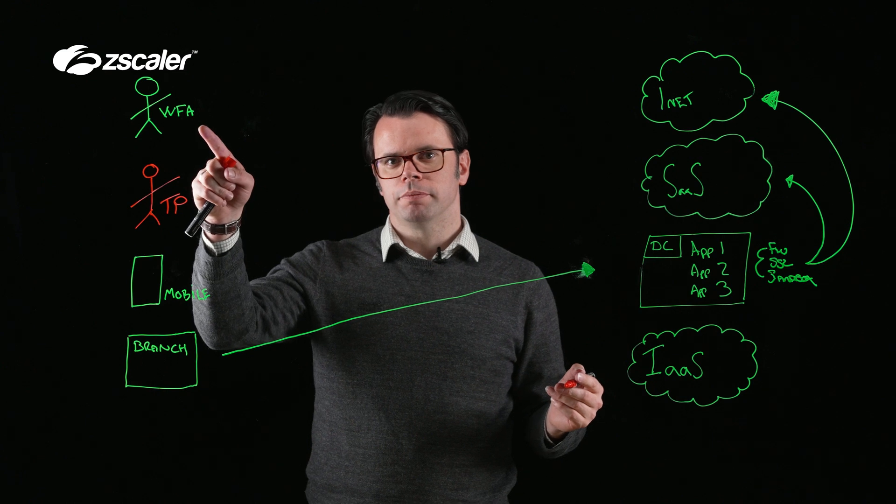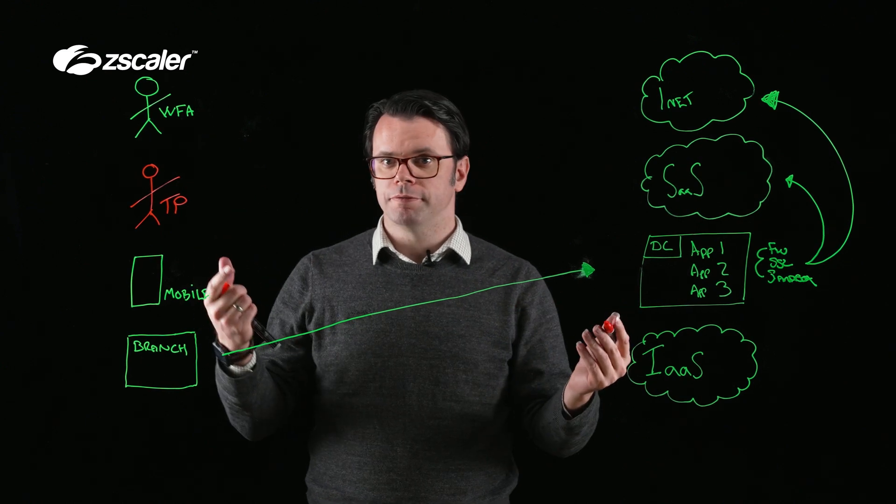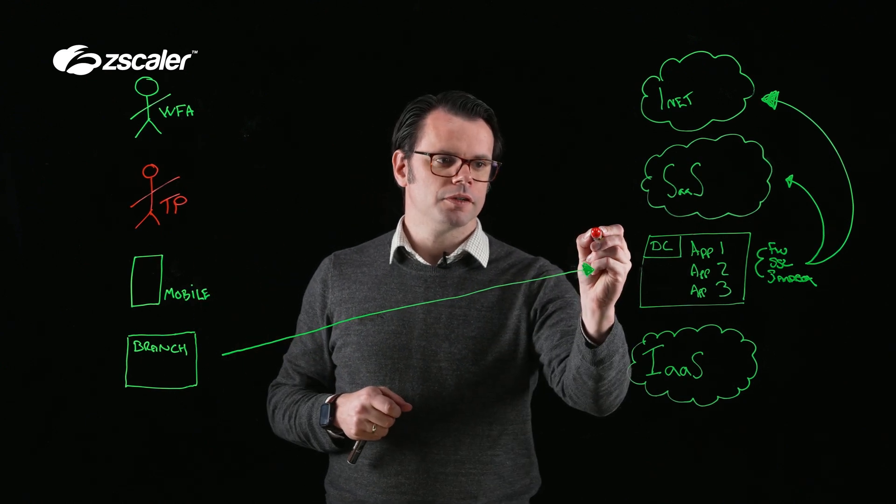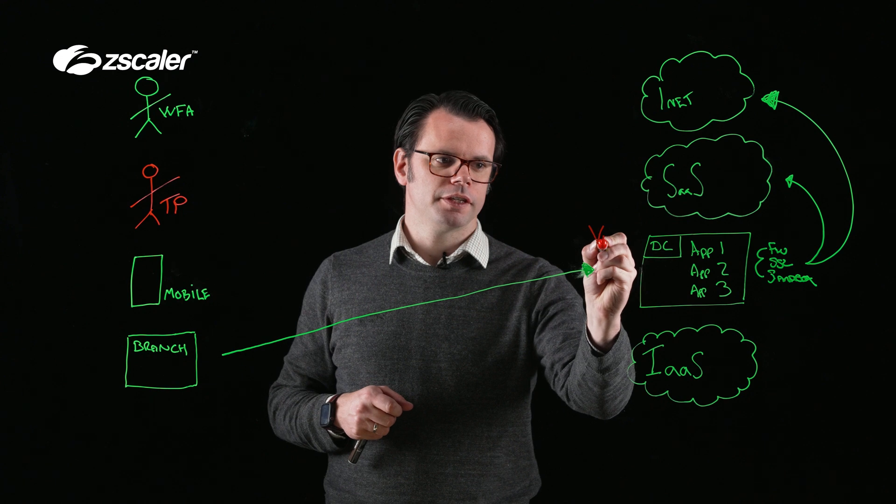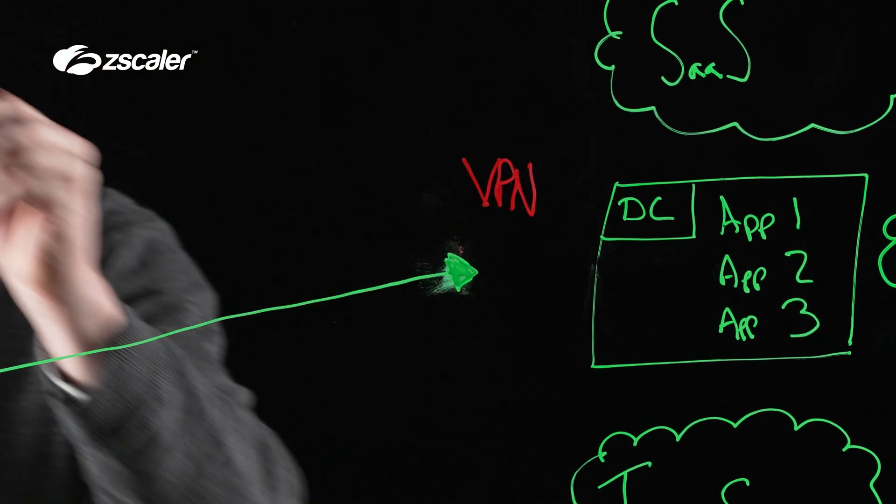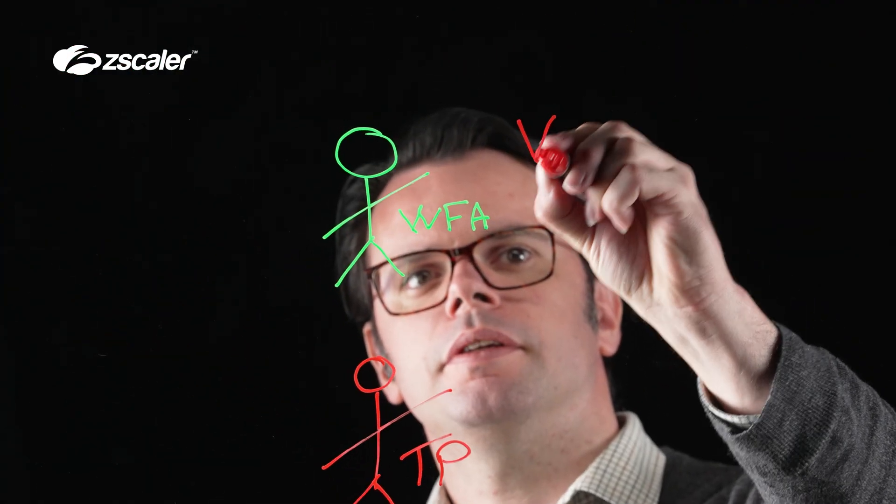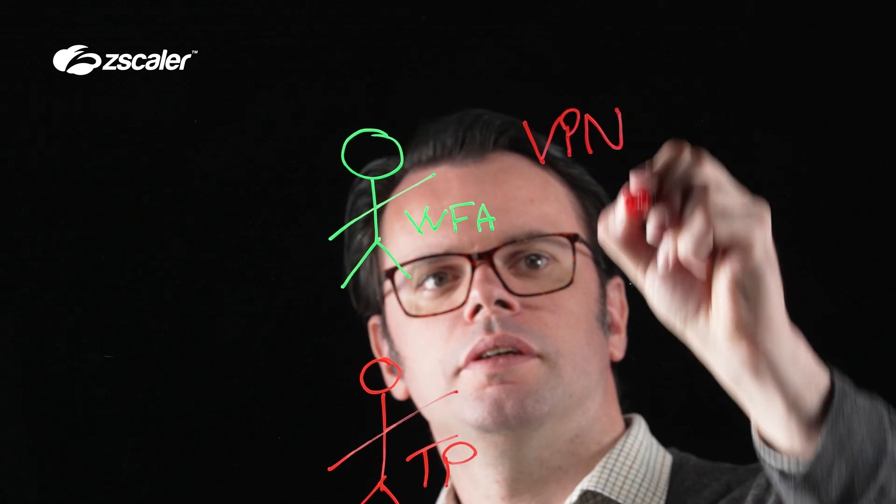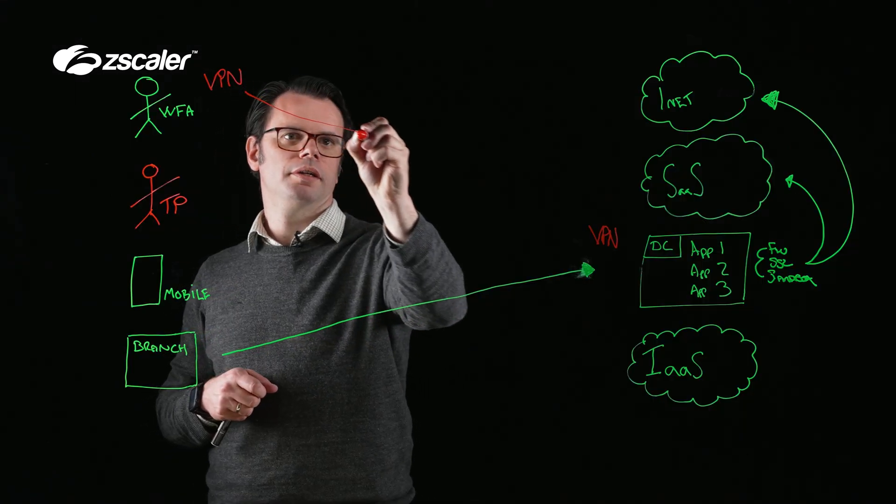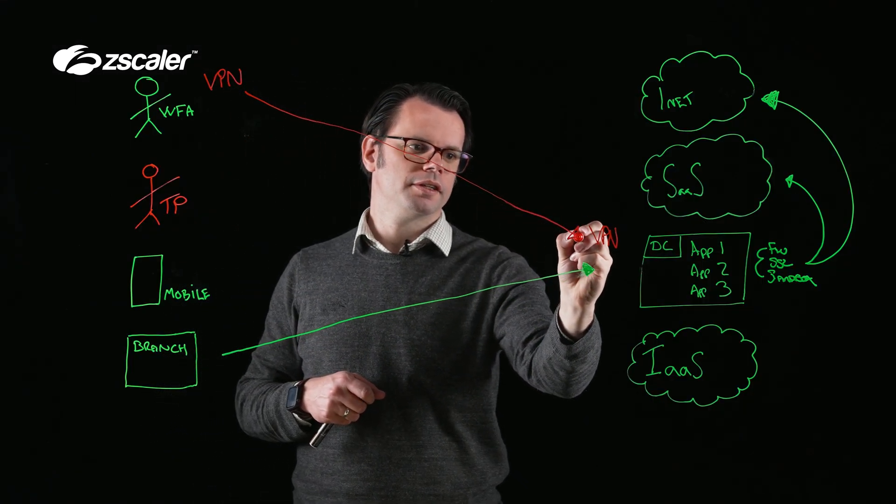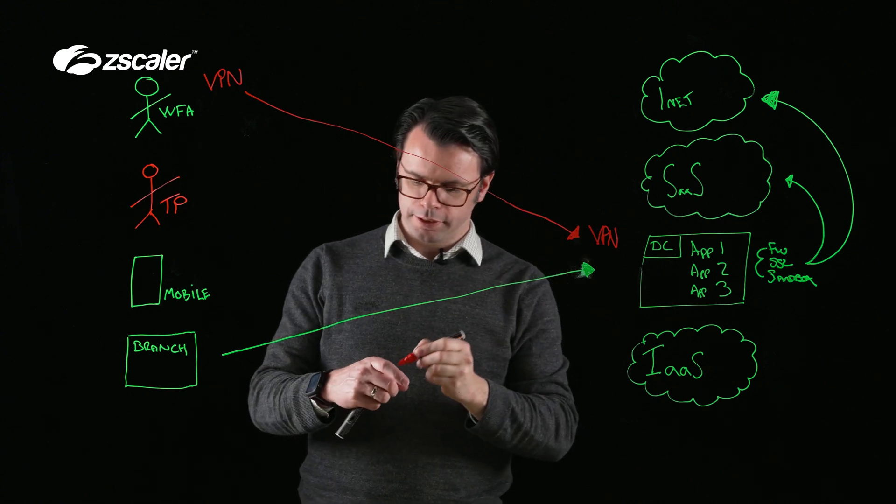So when we think about people working from anywhere, we would usually have a VPN solution for them. We'd have a VPN concentrator, we'd have a VPN agent, and we would run connection from that device down to the data center.